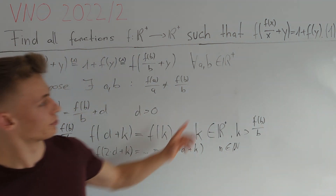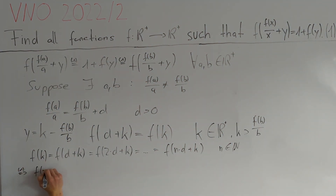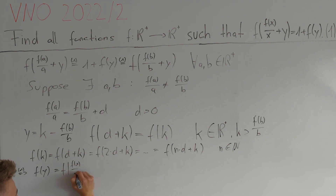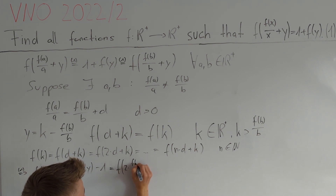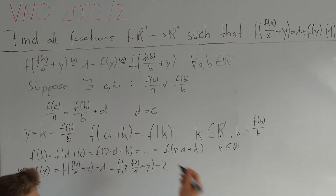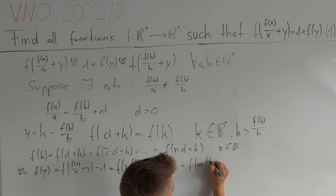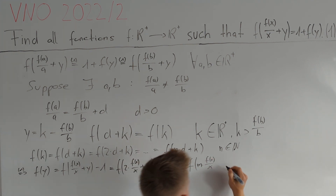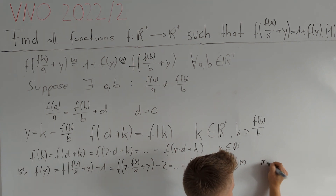Let's find a similar iteration using equation 1. We can write f(y) = f(f(x)/x + y) − 1. Using equation 1 again, this equals f(2·f(x)/x + y) − 2. Repeating this, we get f(y) = f(m·f(x)/x + y) − m, where m is a positive integer.